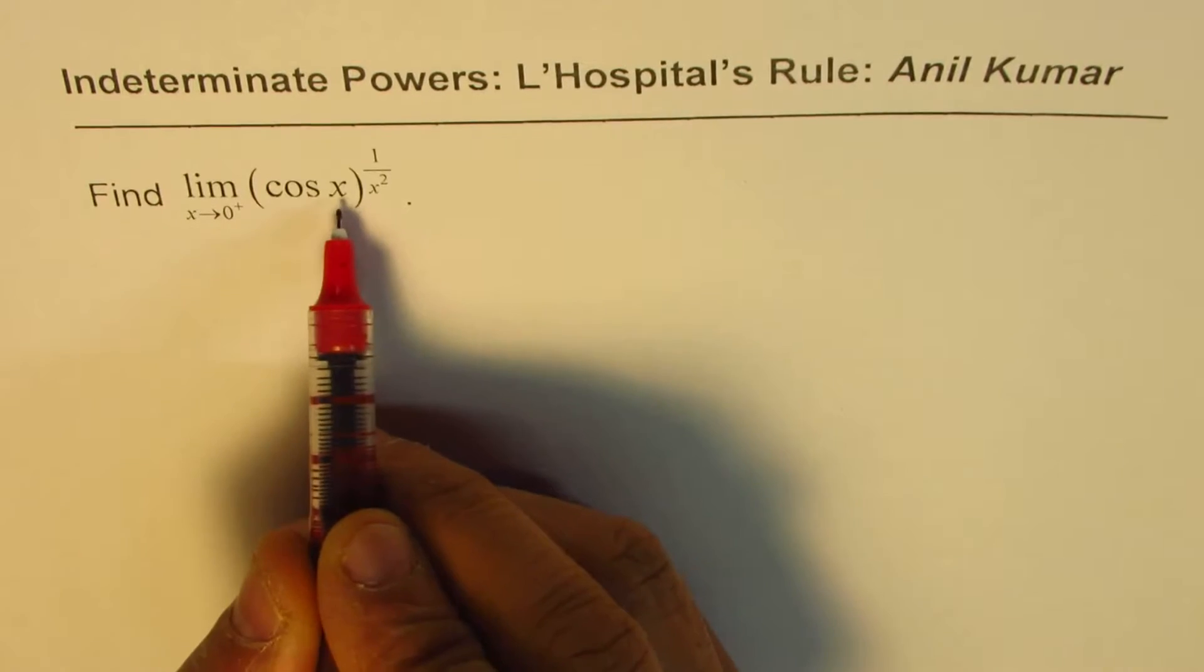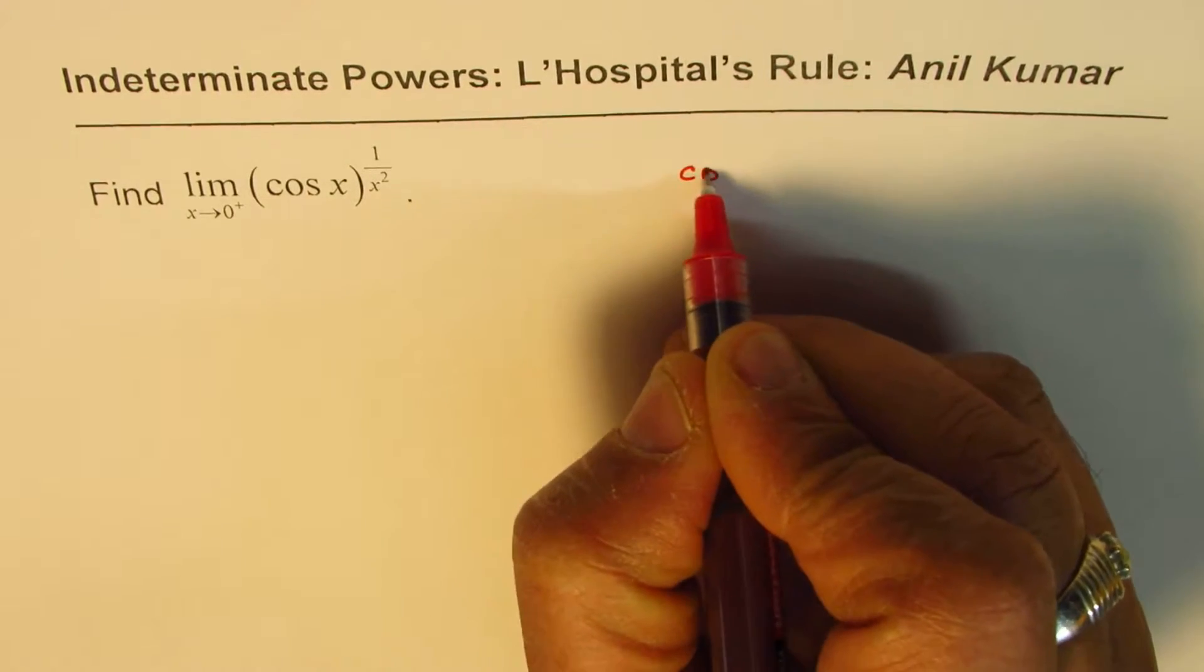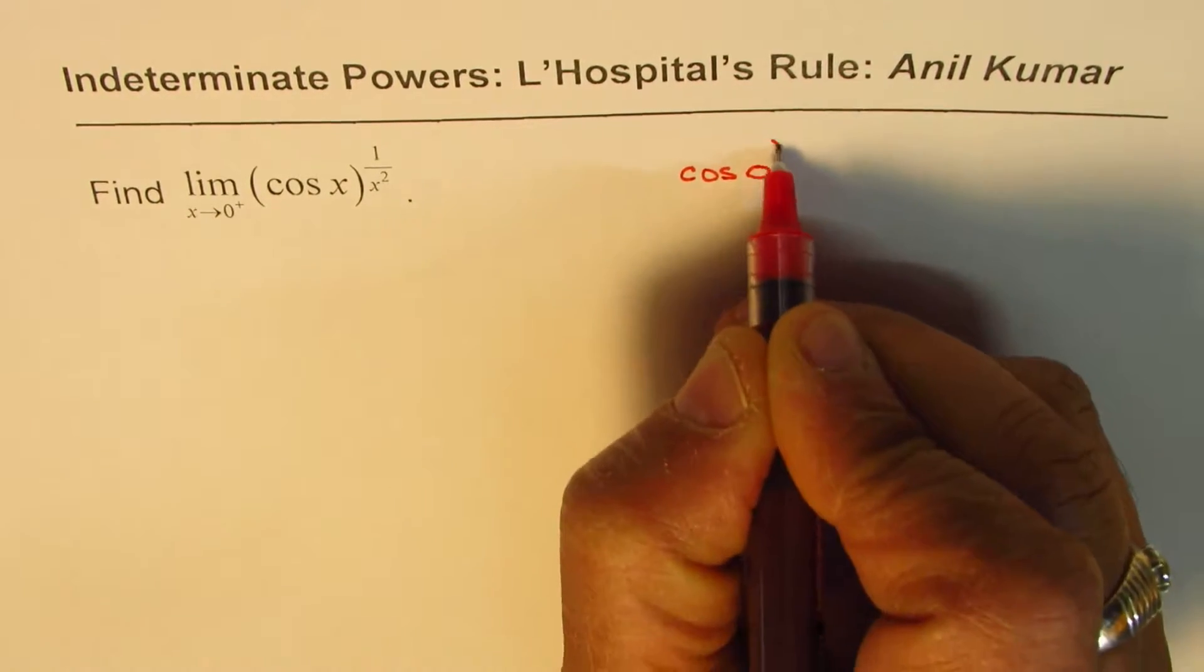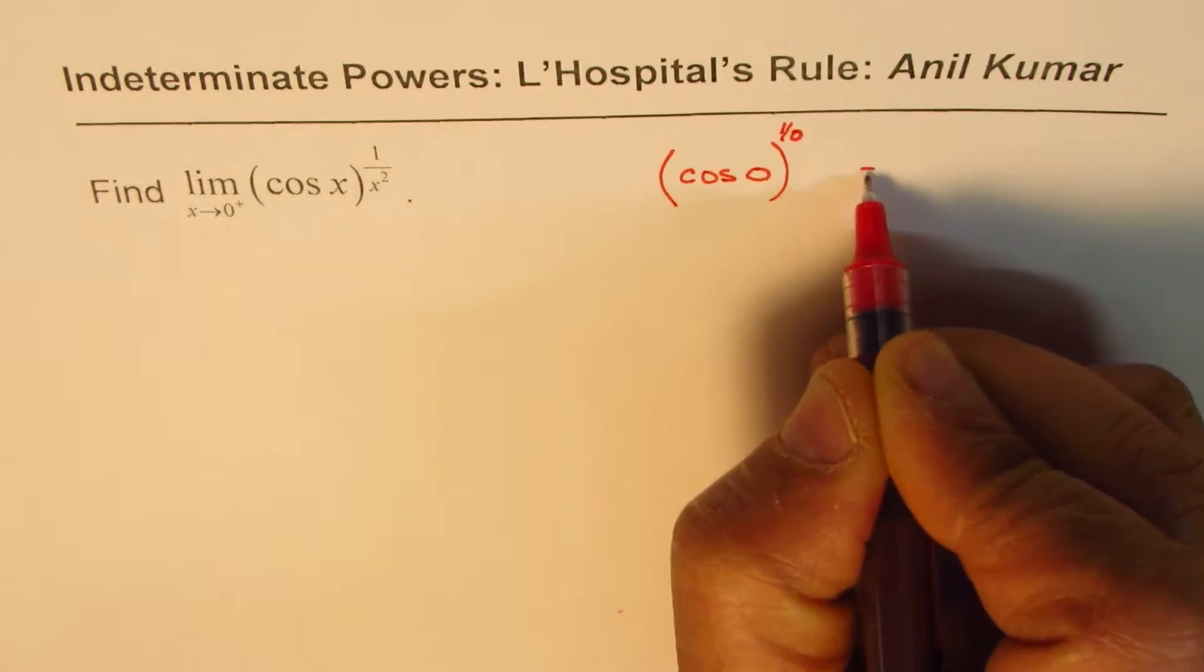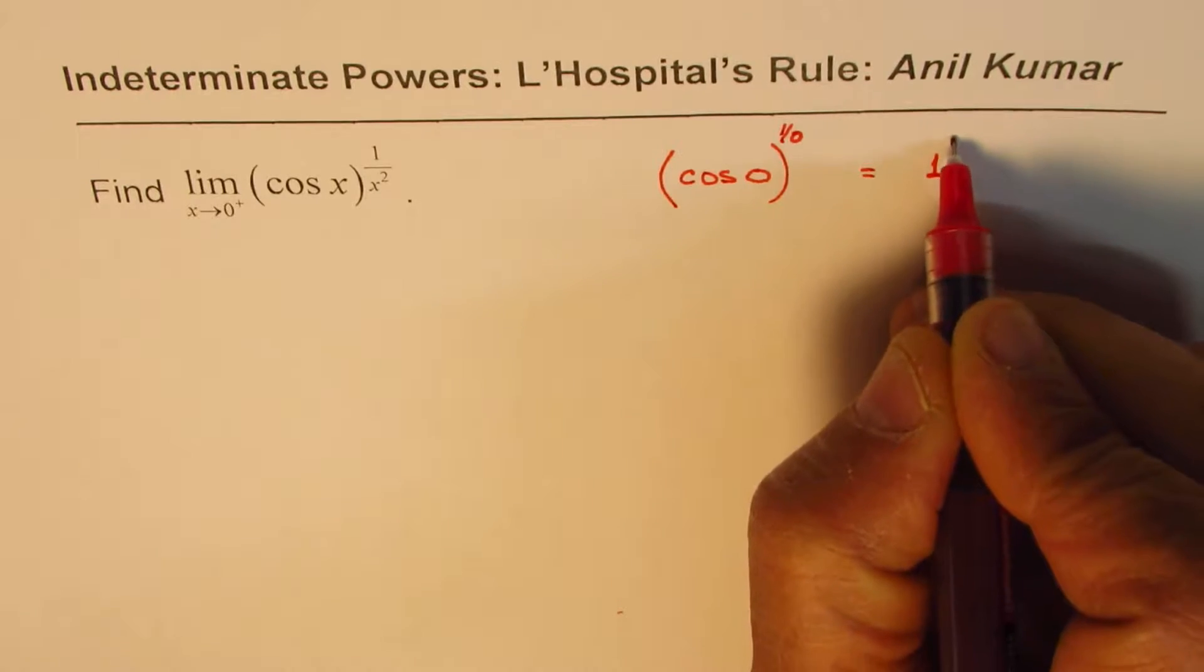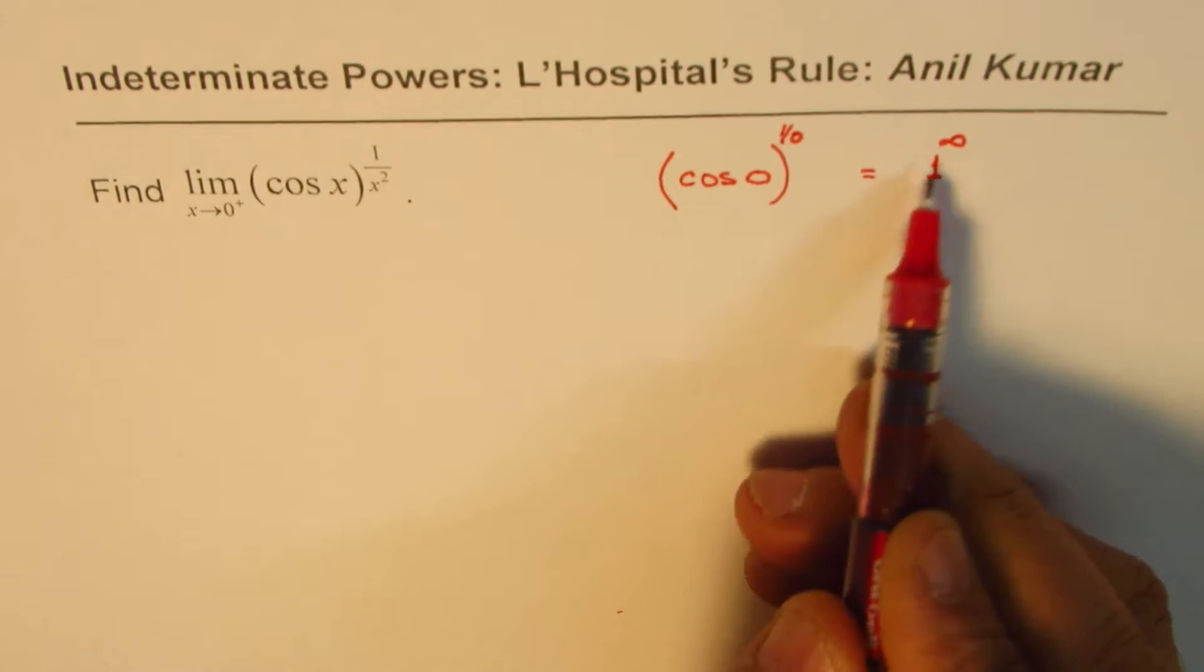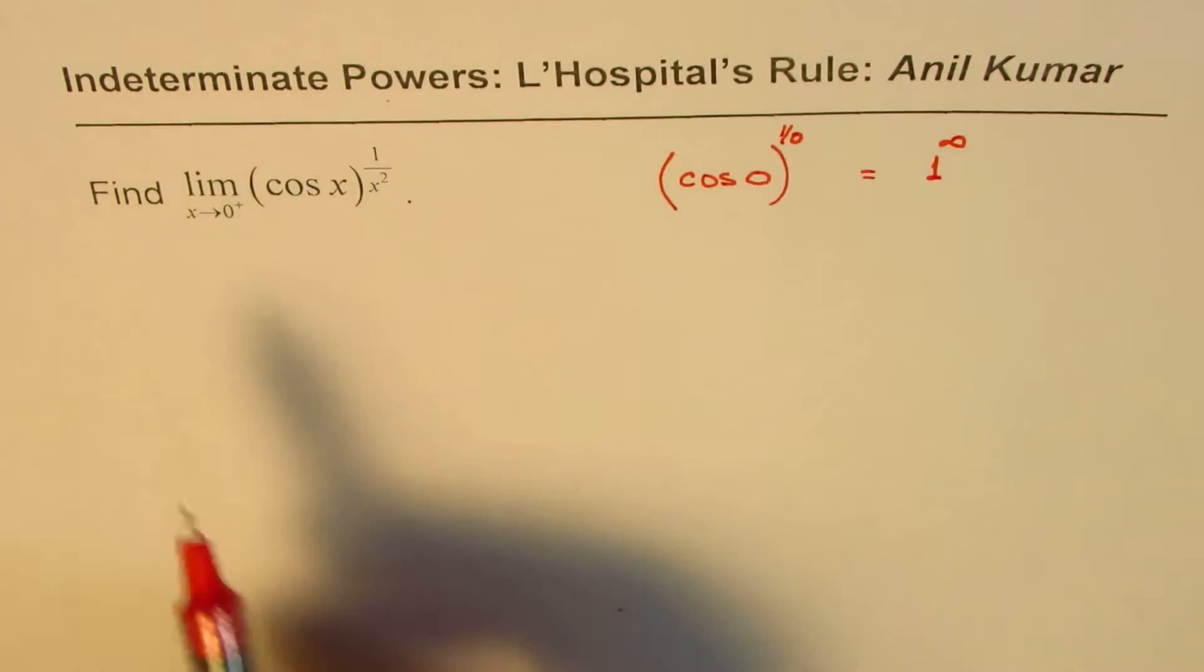Now if I substitute 0, what do I get? We get cos of 0 to the power of 1 over 0. So 1 over 0 is infinity and cos of 0 is 1. So we get 1 to the power of infinity. That is the case of indeterminate powers.